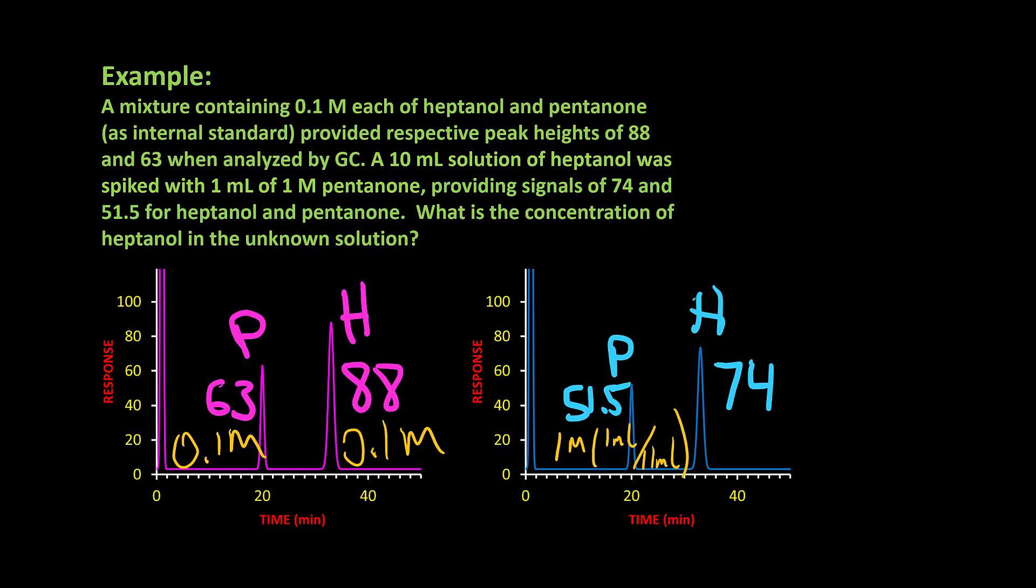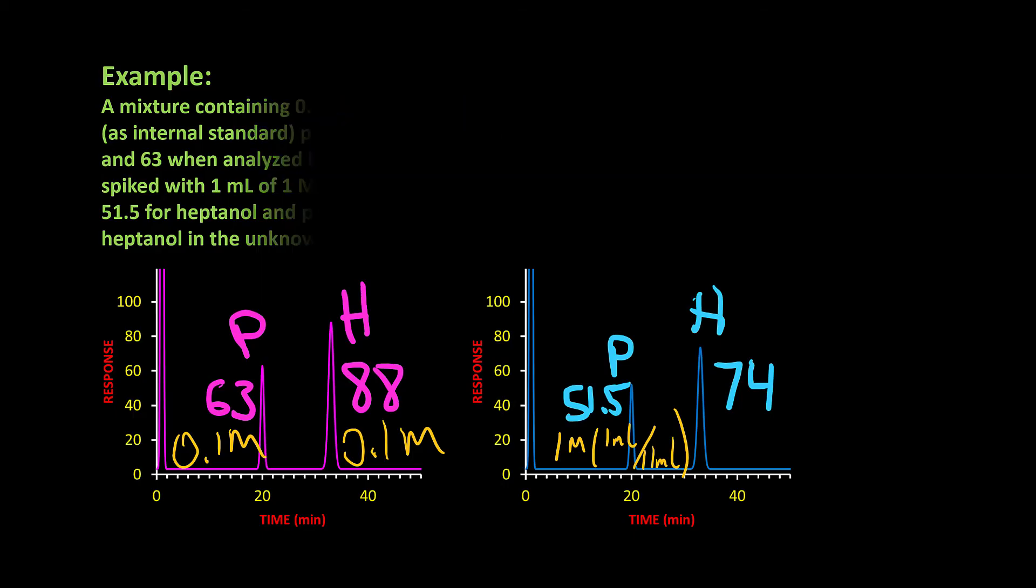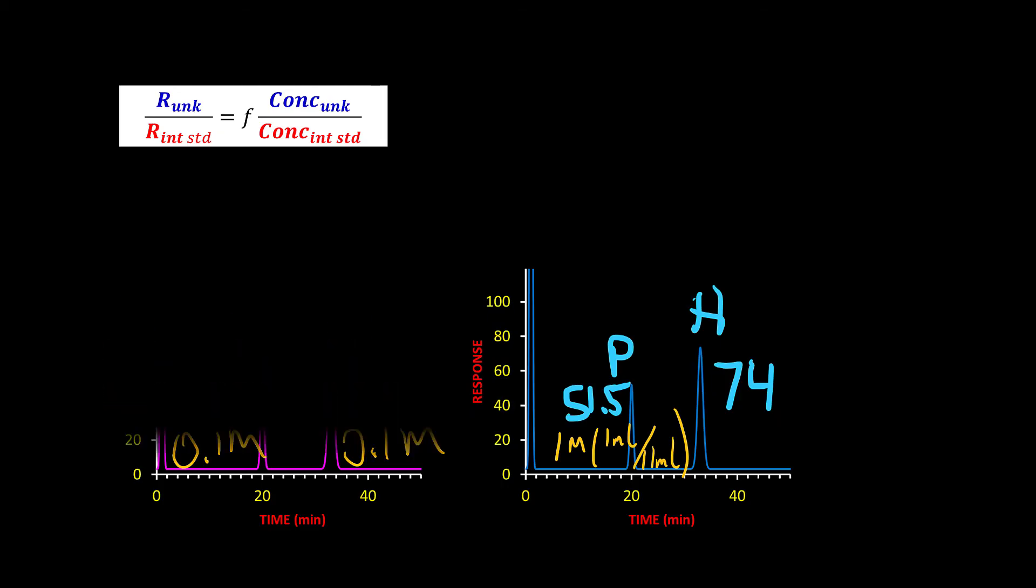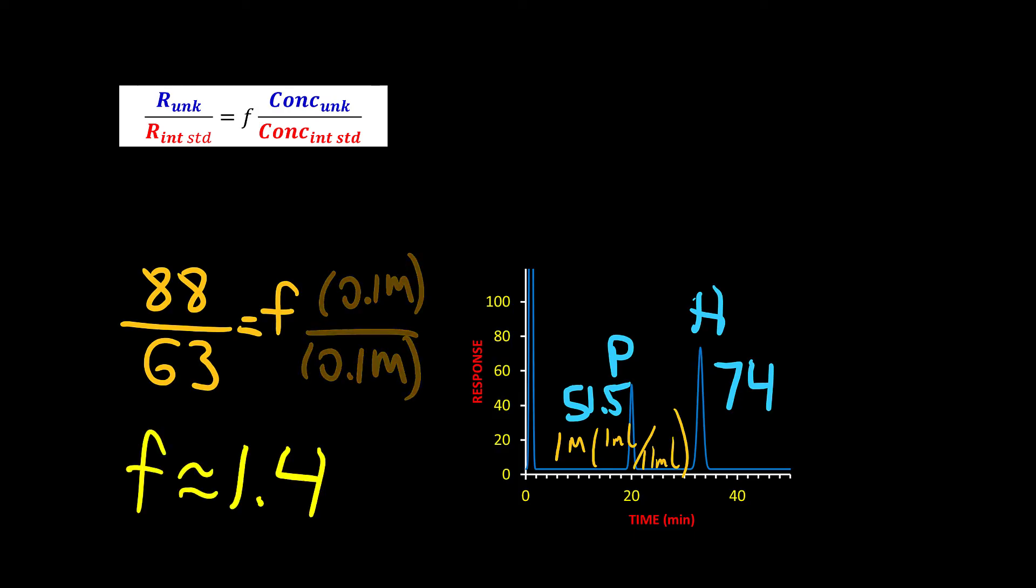So from here, we have a lot of information. We're going to try to organize this into the equations that we were provided and solve for the unknown. This is the equation for the internal standard, and we're going to be able to apply this twice. In the first instance, the purple trace, will actually have all the information that we need to solve for the response ratio. So plugging in the numbers here, the ratio of responses and the concentrations, we actually already solved for it, the response factor is 1.4.